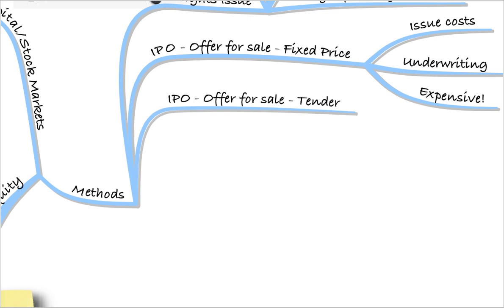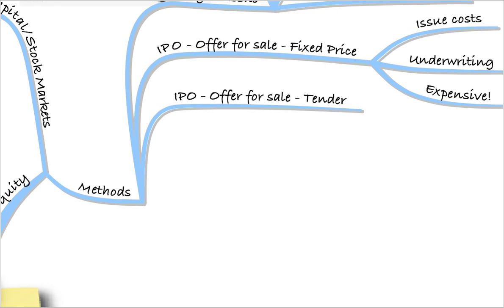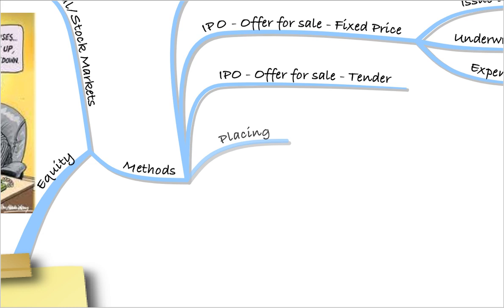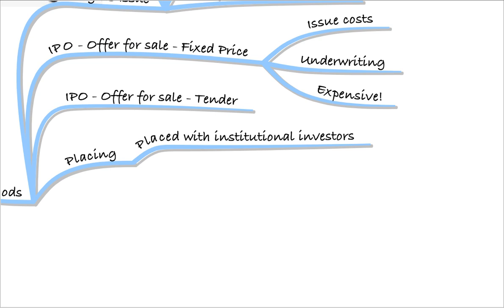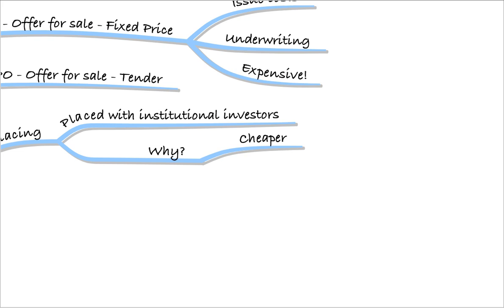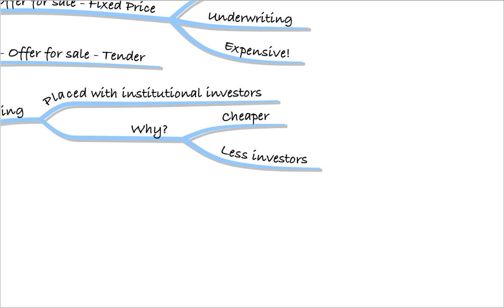The same goes for an IPO at a tender — you might not get the amount you wanted under a tender agreement. Lastly, we talked about a placing, where shares are placed with institutional investors. You go to big investors in the market and ask if they're interested in buying a bulk amount of shares. This is cheaper than an IPO, and you don't have as many investors to deal with — just a few large institutional investors.